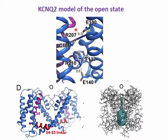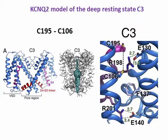In the open state model, the third and fourth gating charges in S4 form salt bridges in S2 with glutamate-130 and glutamate-140. In addition, the hydrophobic residue phenylalanine-137 is located between the two interacting pairs. The C3 deep resting state model emerges from cadmium bridges formed between cysteine-195 in S4 and cysteine-106 in S1. In this resting state model, the first gating charge arginine-198 and the second gating charge arginine-201 of S4 form salt bridges with glutamate-130 and glutamate-140 of S2, stabilizing the channel C3 closed state. The interacting pairs are located above and below the highly conserved phenylalanine-137.